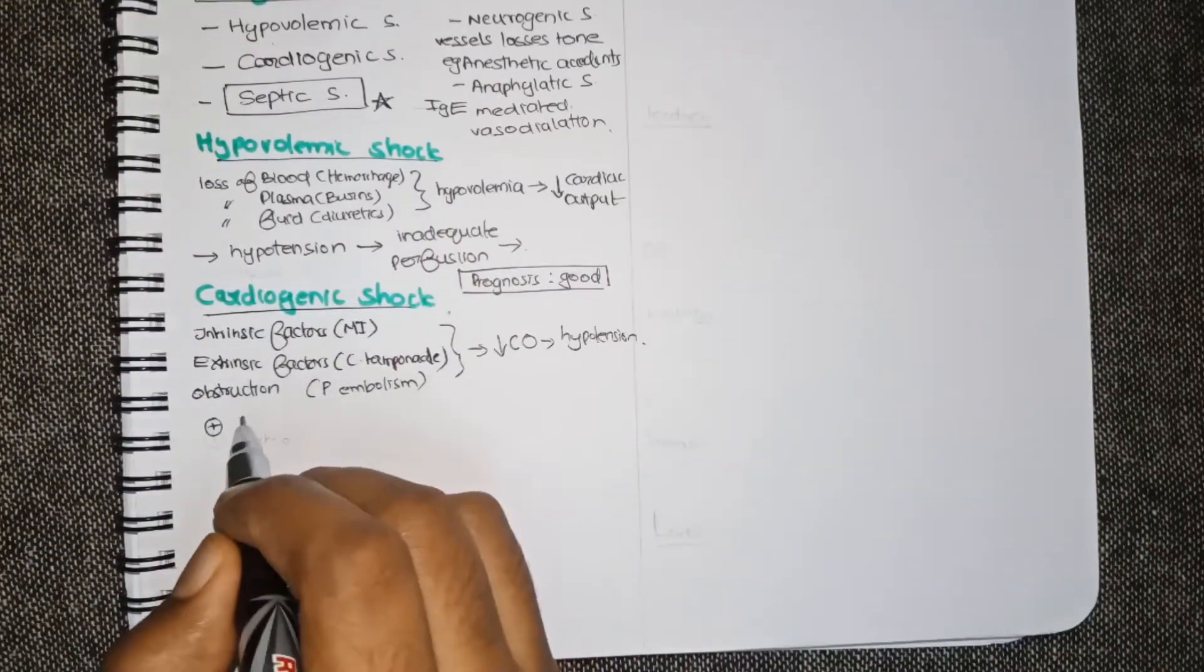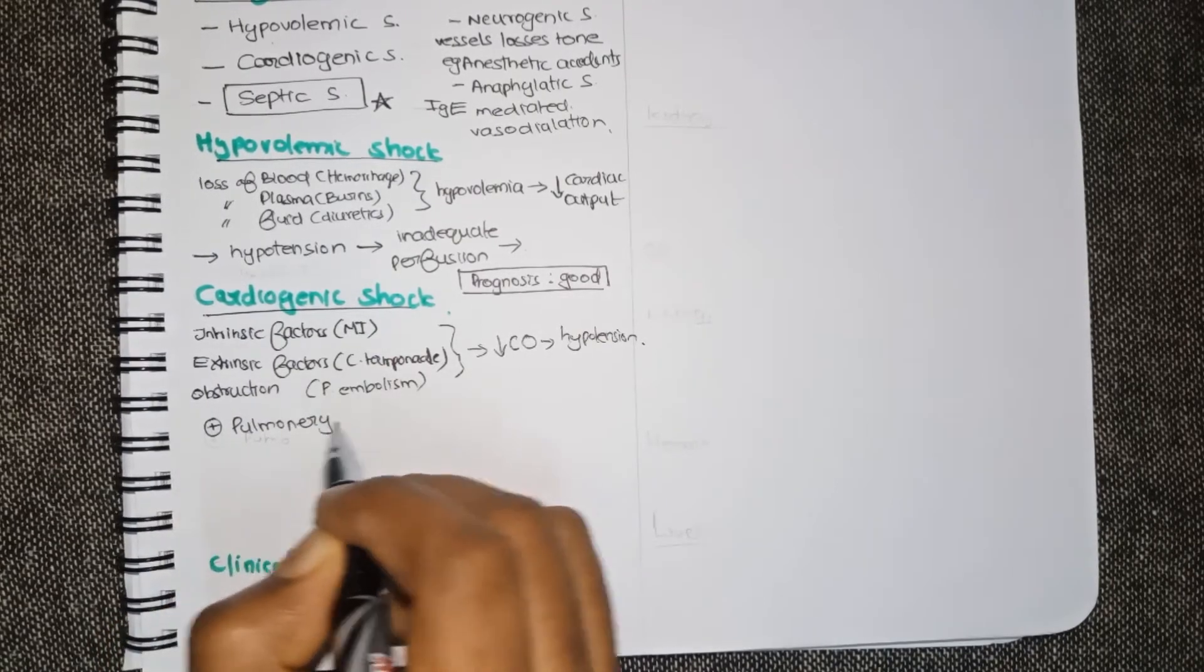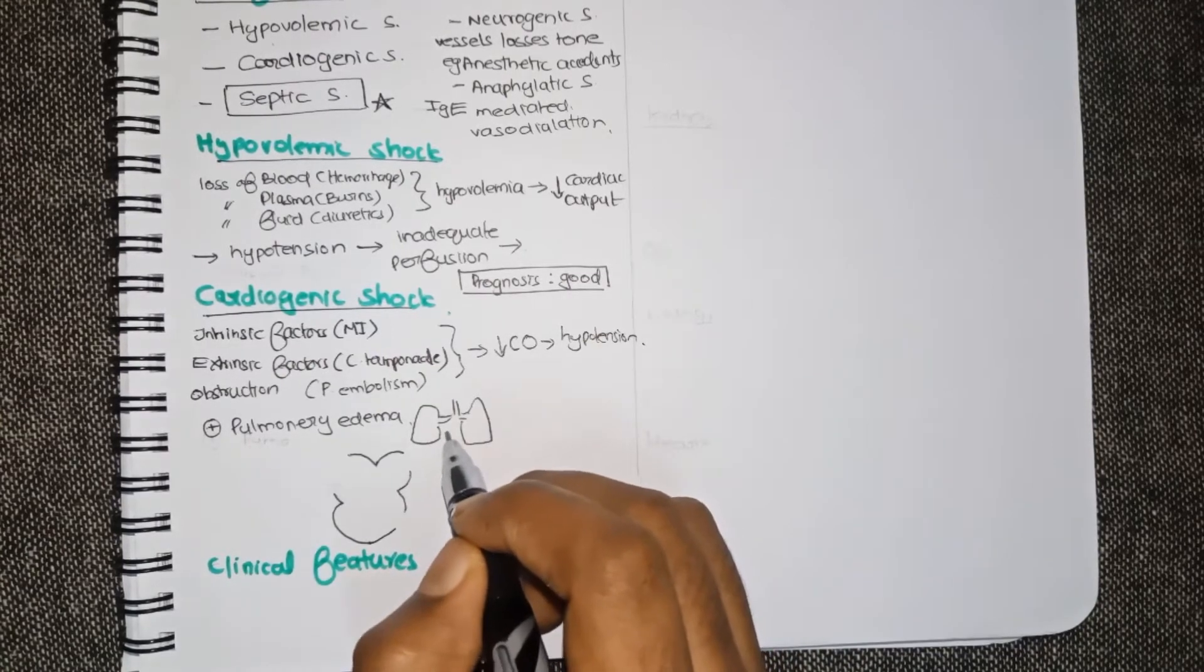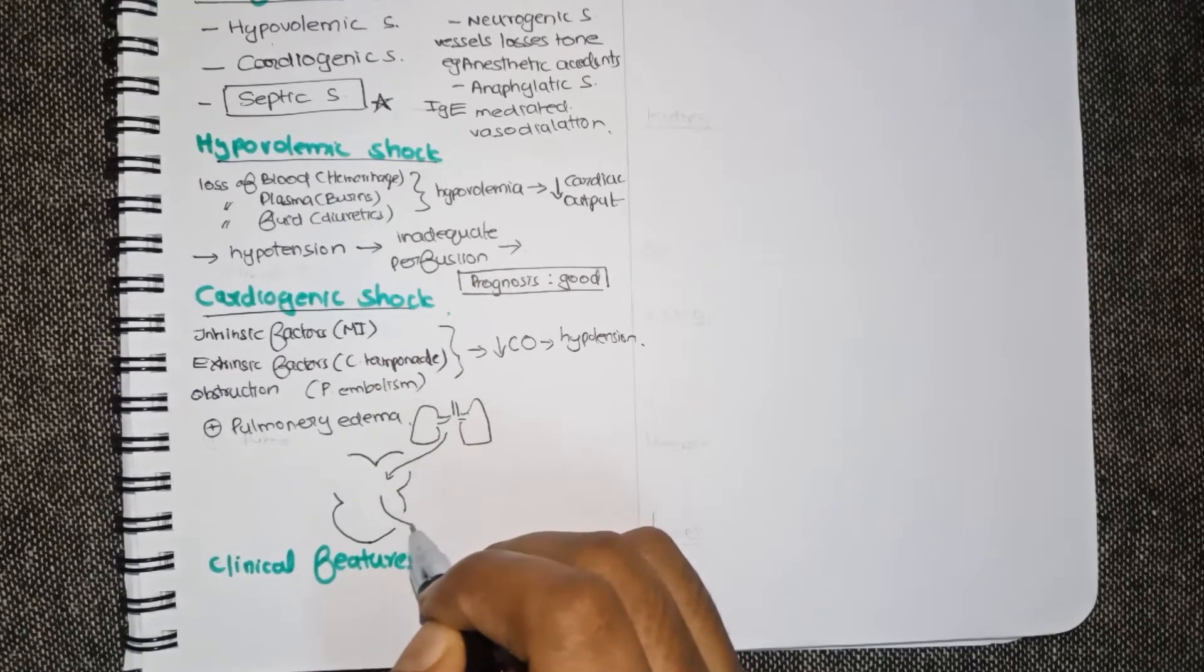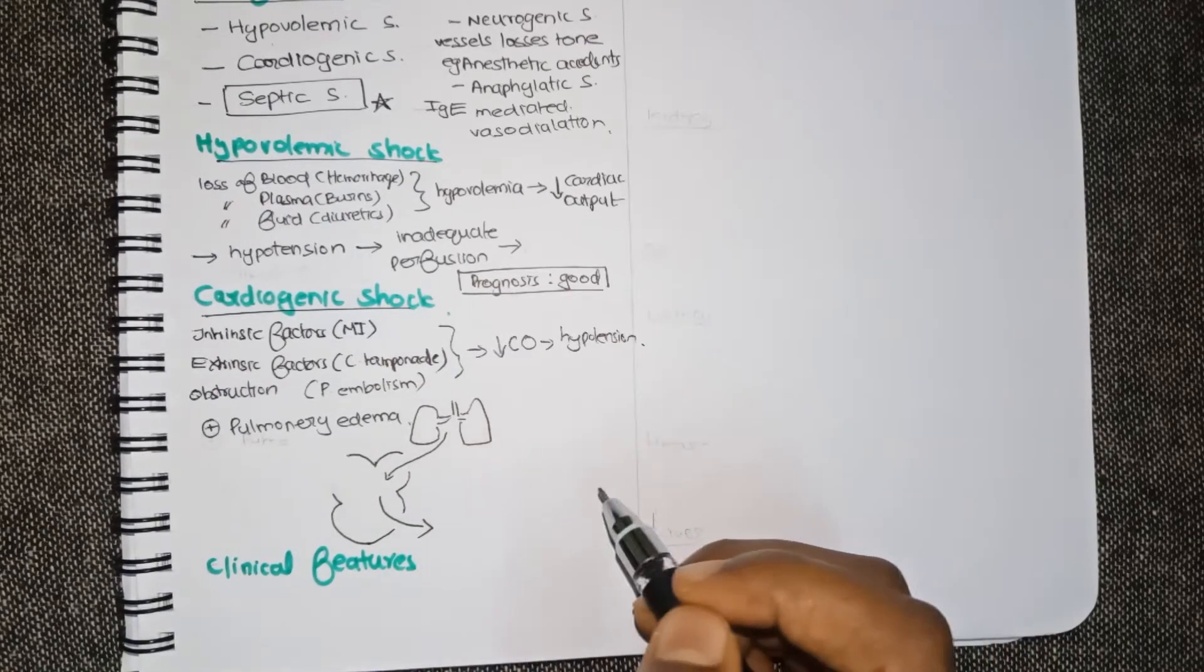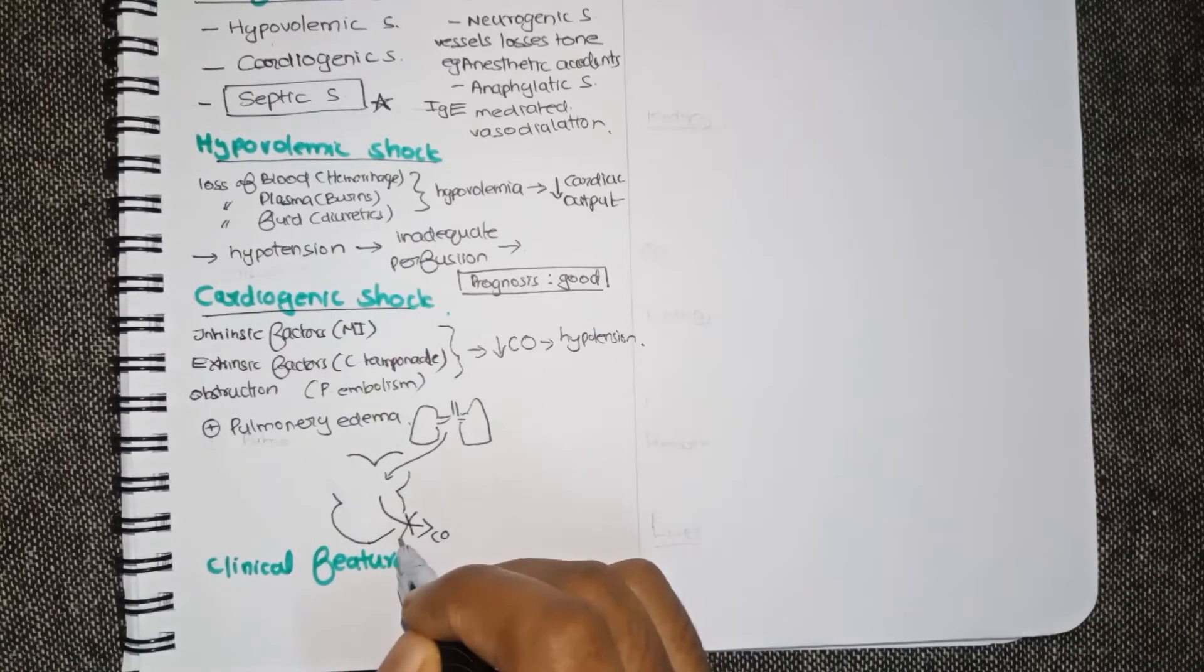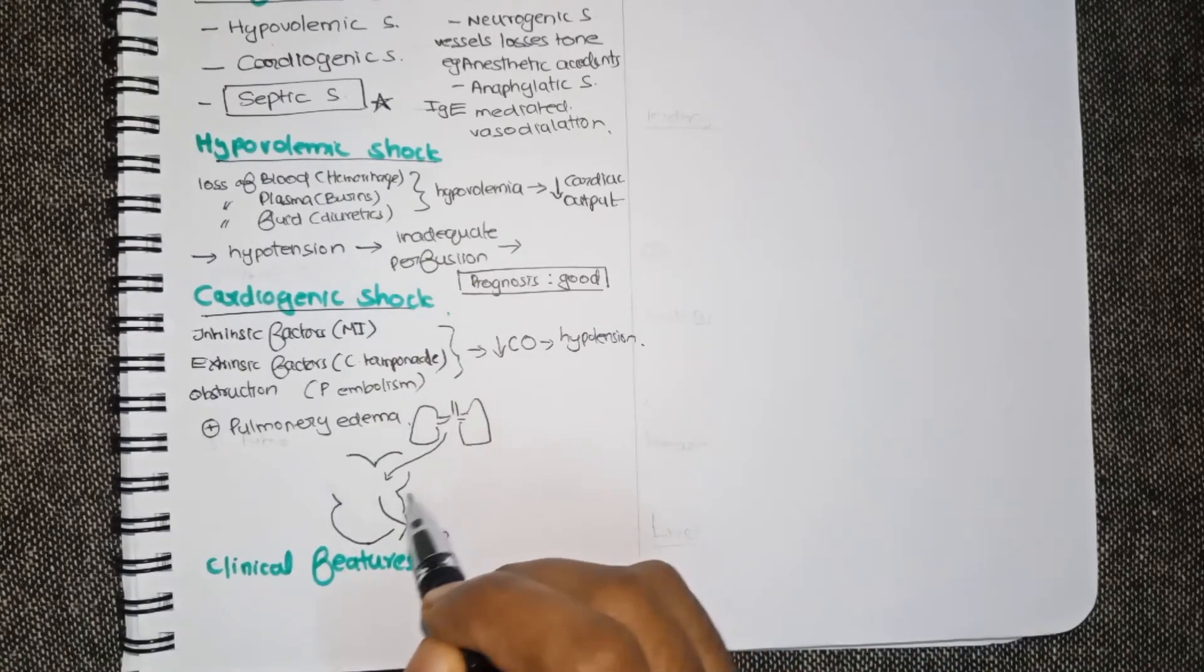Another characteristic feature of cardiogenic shock is pulmonary edema. So what happens here? In heart the oxygenated blood is coming from the lungs and going through the left atrium and then to the left ventricle and to the systemic circulation. The heart is unable to pump all the blood that is reaching it from the lungs.